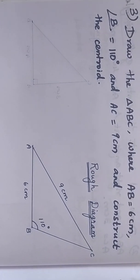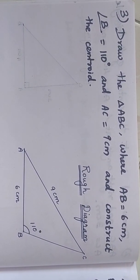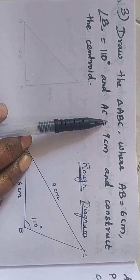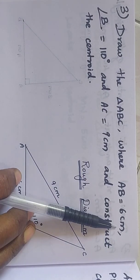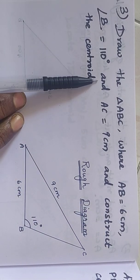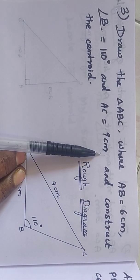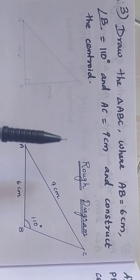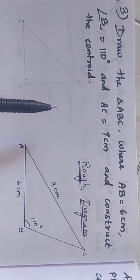Hello students, I am Raj Rajeshwari. Today we are going to see under exercise 4.5 third sum: draw the triangle ABC where AB is equal to 6 cm, angle B is equal to 110 degrees, and AC equal to 9 cm, and construct the centroid. Like previous sum, we are going to construct a centroid for this triangle.